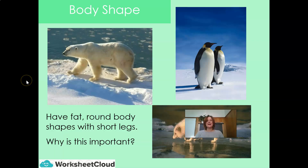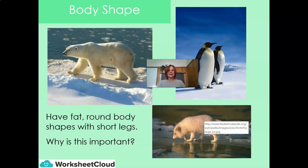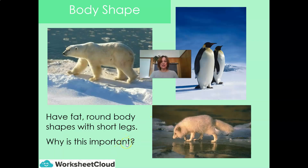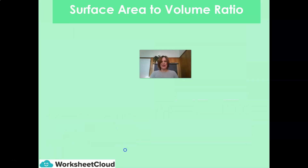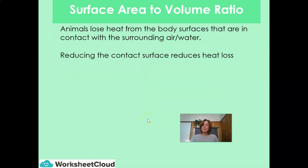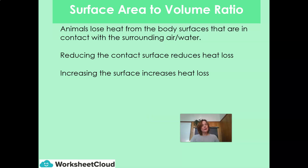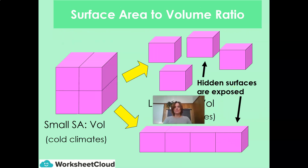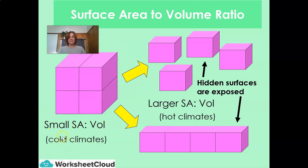Let's take another look at them. They have fat, round body shapes with very short legs. Why is this important? It has to do with the surface area to volume ratio. Animals lose their heat from the body surfaces that are in contact with the surrounding air or water. So by reducing the contact surfaces, you reduce the heat loss. Increasing the surface area increases heat loss. To put it in scientific terms: a small surface area suits a cold climate, and a larger surface area suits a hot climate.